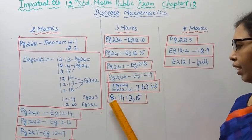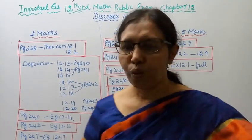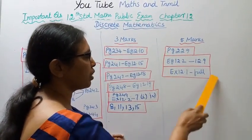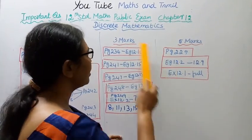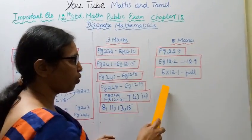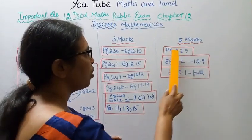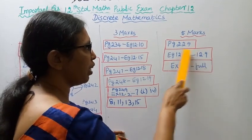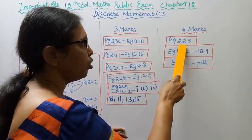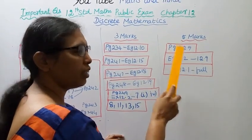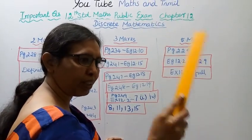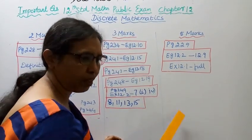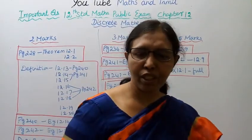5 marks: Exercise 12.1 full, practice Exercise 12.1. Five marks for Discrete Mathematics - closure, associative properties. Page 229, example 12.2 through 12.9. Page 229, example 12.2, 12.3, 12.4, 12.5, 12.6, 12.7, 12.8, 12.9. Practice Exercise 12.1 full.